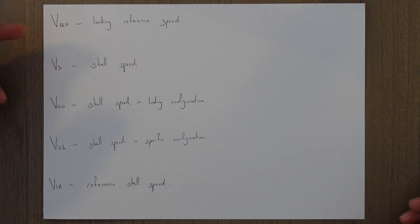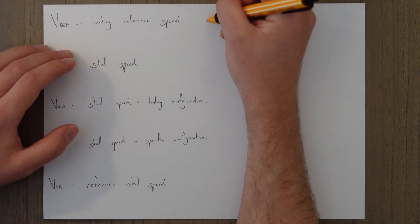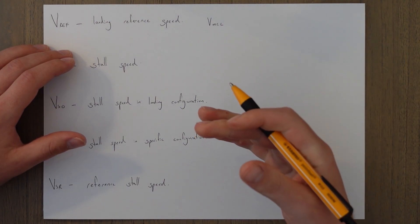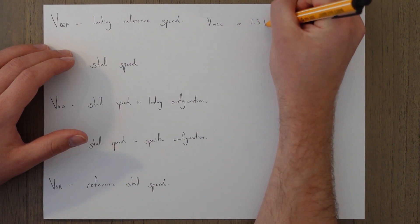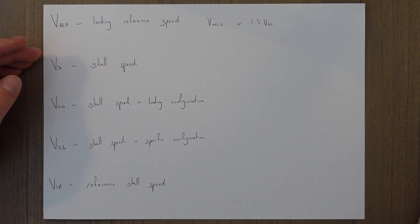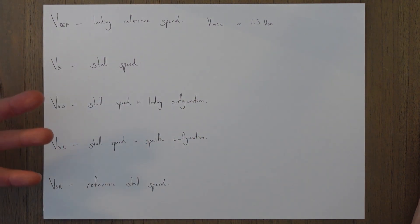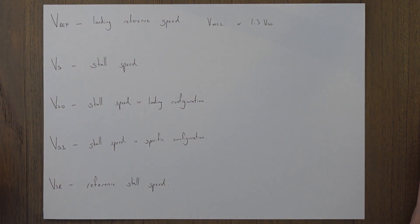VREF is the landing reference speed or the threshold crossing speed and it's either the higher of VMCL, the minimum control speed in the landing configuration, or 1.3 times VSO which is the stall speed in the landing configuration. This just provides a sufficient buffer in case of needing to go around that we will be able to control the aircraft safely and not stall it basically.